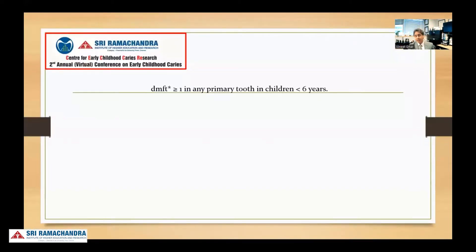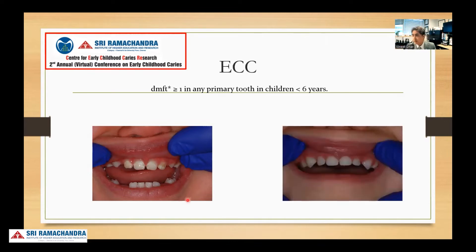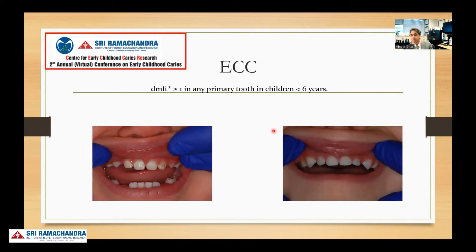We know that early childhood caries is DMFT of one or more in any primary tooth in children less than six years. When you see a patient with facial caries lesions, you would definitely say this is ECC — that's an easy diagnosis. But what about patients with restored lesions? If you were to see this patient for the first time with restorations, the first thought in your mind may not be that this is ECC. But that's where the shift has taken place. ECC is more of a disease process, and the diagnosis is not restricted to untreated caries only. So even this child who has restored facial surfaces would be diagnosed with ECC, maybe at low risk at this point.